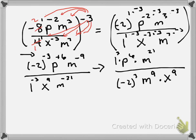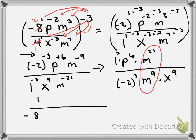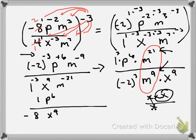Now the only conflict is the M's — we have M's on the top and M's on the bottom. Let's clean this up. 1 to the 3rd power is 1. Negative 2 to the 3rd power is negative 2 times negative 2 times negative 2, which makes negative 8. P to the 6th and X to the 9th stay where they are. For the M's, I have 21 on top and 9 on the bottom — I subtract them and get 12. Since 21 is bigger than 9, M to the 12th is on top.